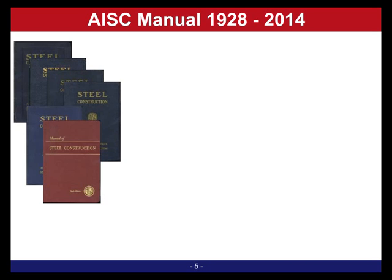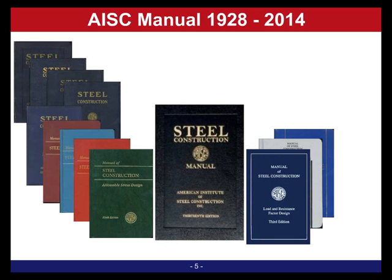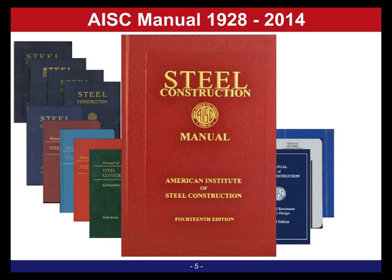Starting in 1928 with the first steel manual that had the first specification in it, there were nine ASD manuals and three LRFD manuals. Then in 2005, they took the ninth ASD manual and the third LRFD manual — a total of 12 — and came out with the 13th edition steel construction manual, which merged the ASD and LRFD design methods into one document. That has continued into the 14th edition.